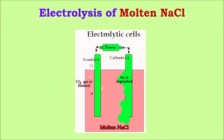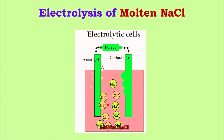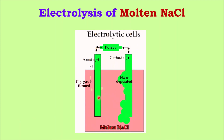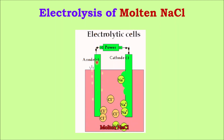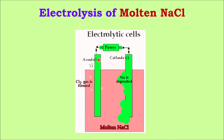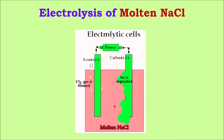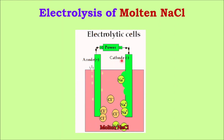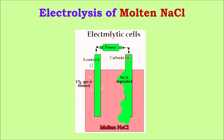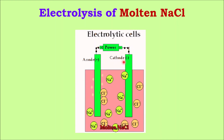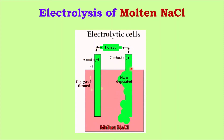Let us see an animation to understand this better. You can see that chloride ions are getting attracted towards the positively charged anode and chlorine gas is liberated. At the cathode, sodium ions are getting reduced to sodium metal, and that is why the mass of the cathode electrode increases as sodium is continuously deposited on it.